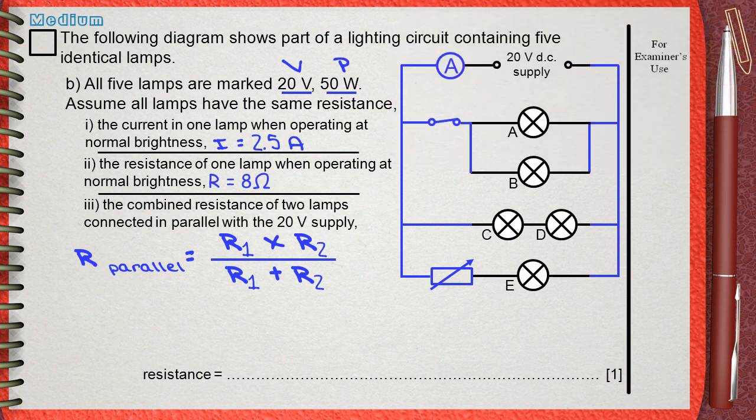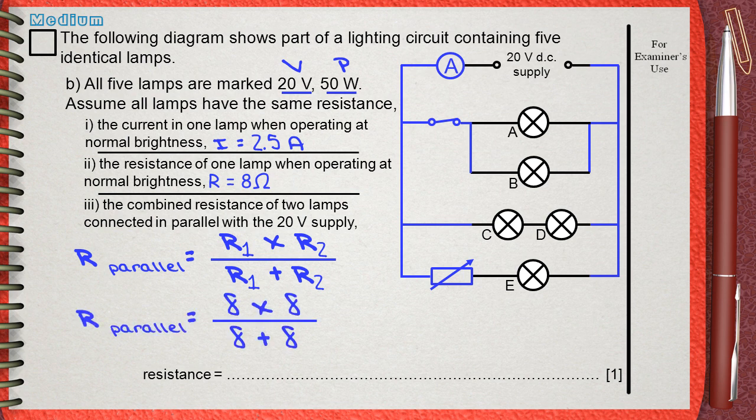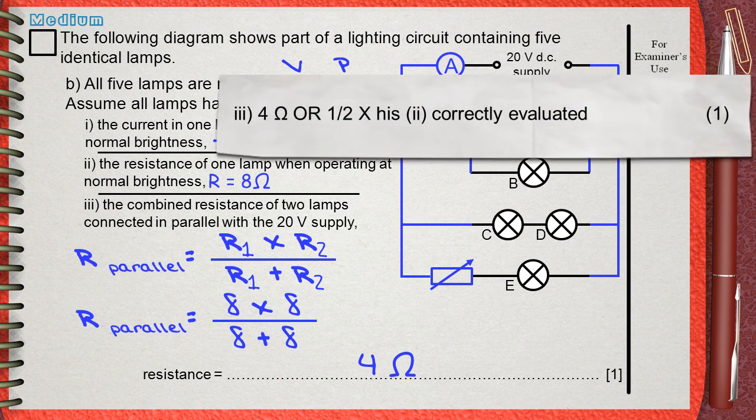So if two of them are connected in parallel, their combined resistance will be 8 times 8 divided by 8 plus 8. This gives 4 Ohms. The mark scheme awards the mark for the 4 Ohms and this is our final answer.